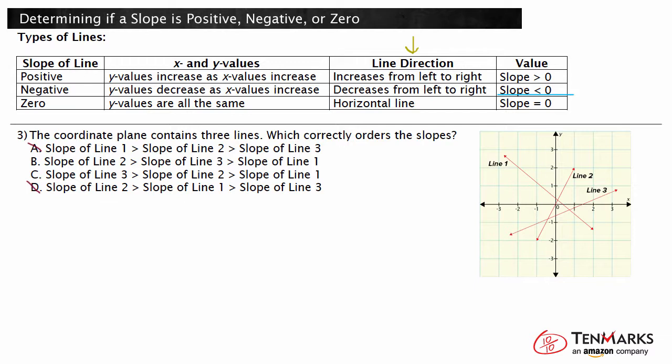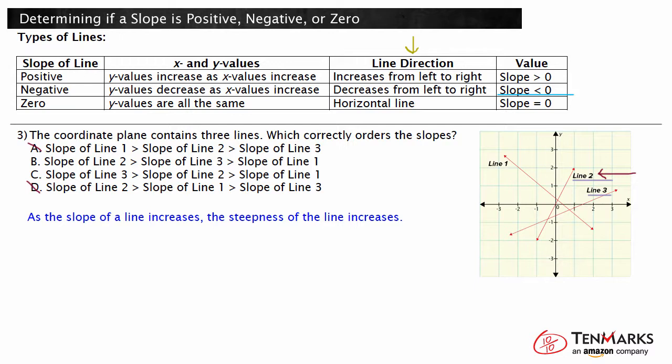We know that lines 2 and 3 are both positive, so we need to determine which has a greater slope. As the slope of a line increases, the steepness of the line increases. Line 2 is much steeper than line 3. Since line 2 is the steepest, we know that its slope is greater than line 3. We know that line 3 has a greater slope than line 1 since line 1 is negative. The order should be: line 2 is greater than line 3, which is greater than line 1.